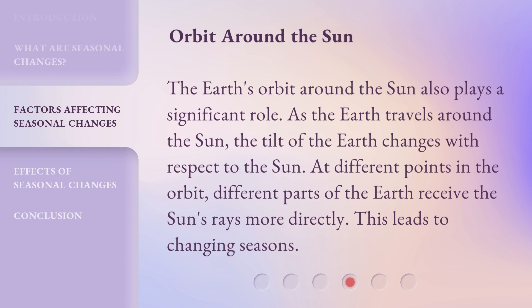Orbit around the Sun. The Earth's orbit around the Sun also plays a significant role. As the Earth travels around the Sun, the tilt of the Earth changes with respect to the Sun. At different points in the orbit, different parts of the Earth receive the Sun's rays more directly. This leads to changing seasons.